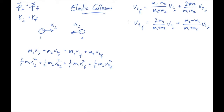Let's do some algebra on the conservation equations. First, I'll cancel all the one-halves from the kinetic energy equation. Now I'll move everything to do with object 1 to the left side and everything to do with object 2 to the right side. For the kinetic energy equation, I get a difference of squares: v1i² - v1f², which I can factor into (v1i + v1f)(v1i - v1f) = -m2·(v2i + v2f)(v2i - v2f).